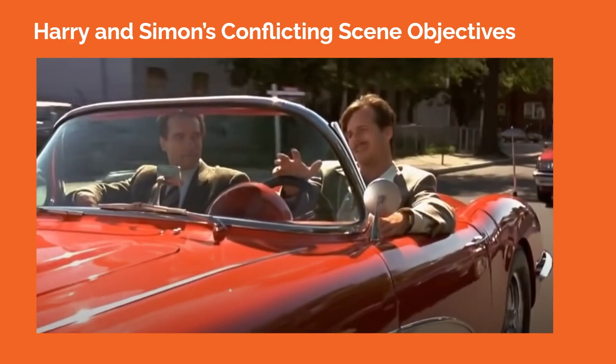What makes the scene work so well in regards to subtext is that Harry and the car salesman Simon are on different wavelengths as the scene progresses. They have conflicting scene objectives. Harry wants to get Simon to confess that he's having an affair with Helen, or at least to confess some truth that sheds light on what Helen is doing with Simon. Simon's objective is to sell an expensive car to Harry by boasting about his own sexual exploits and how the car is part of his seduction strategy. During this scene, Simon has no idea that Harry is a secret agent, so there is an added layer of contrast where Simon pretends to be a man of mystery while Harry is the real deal.